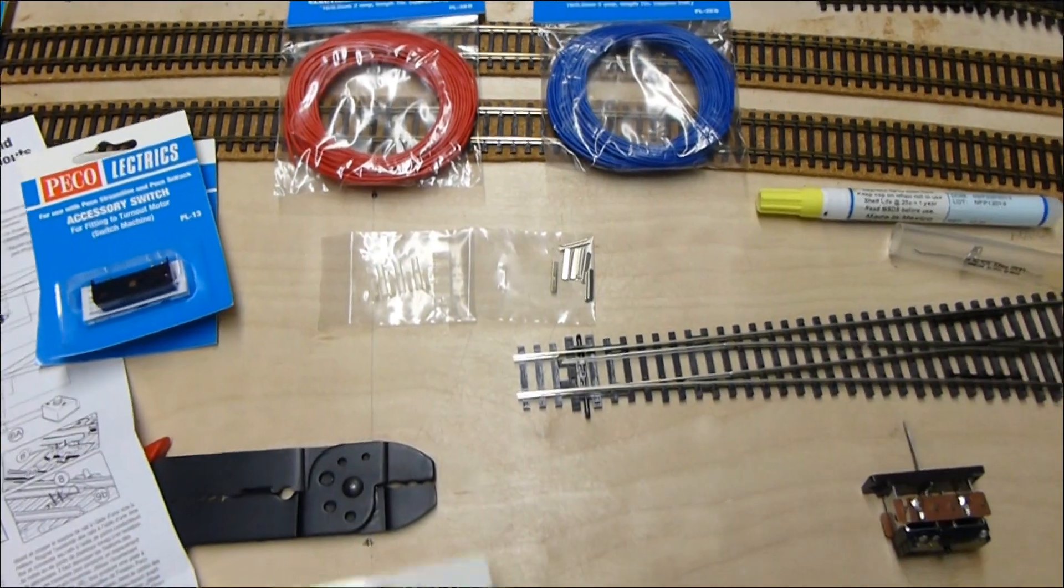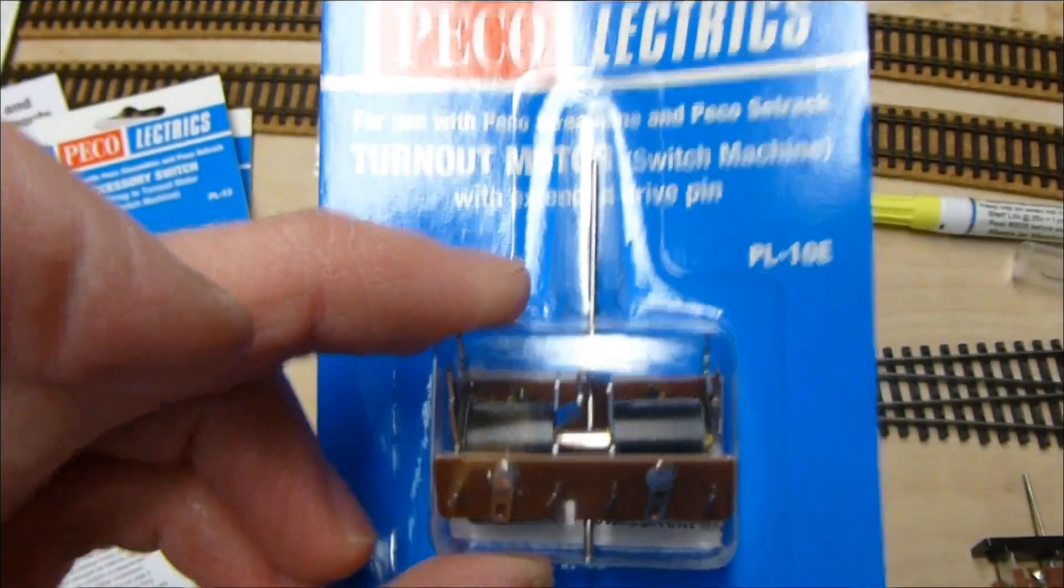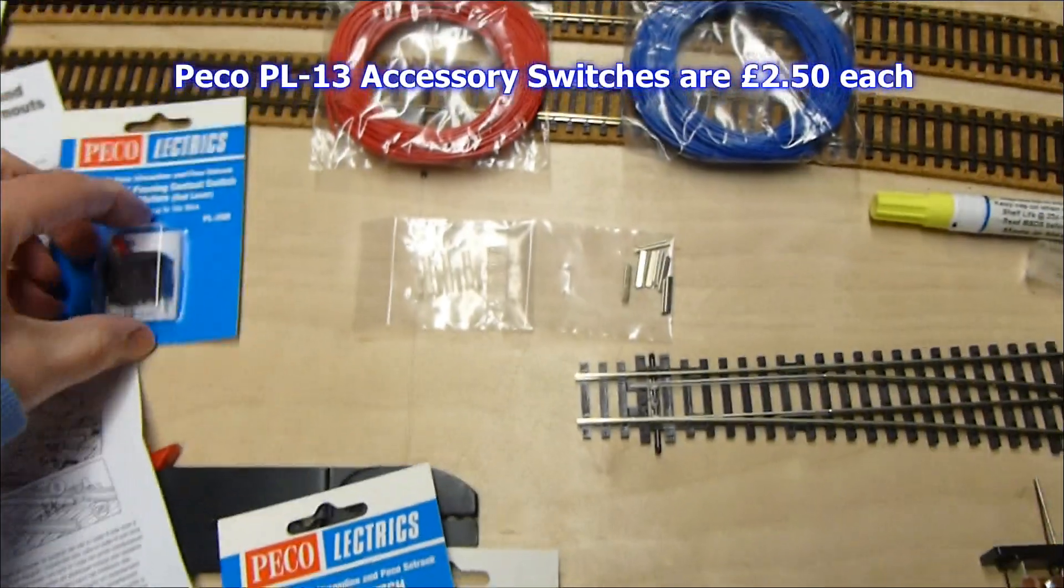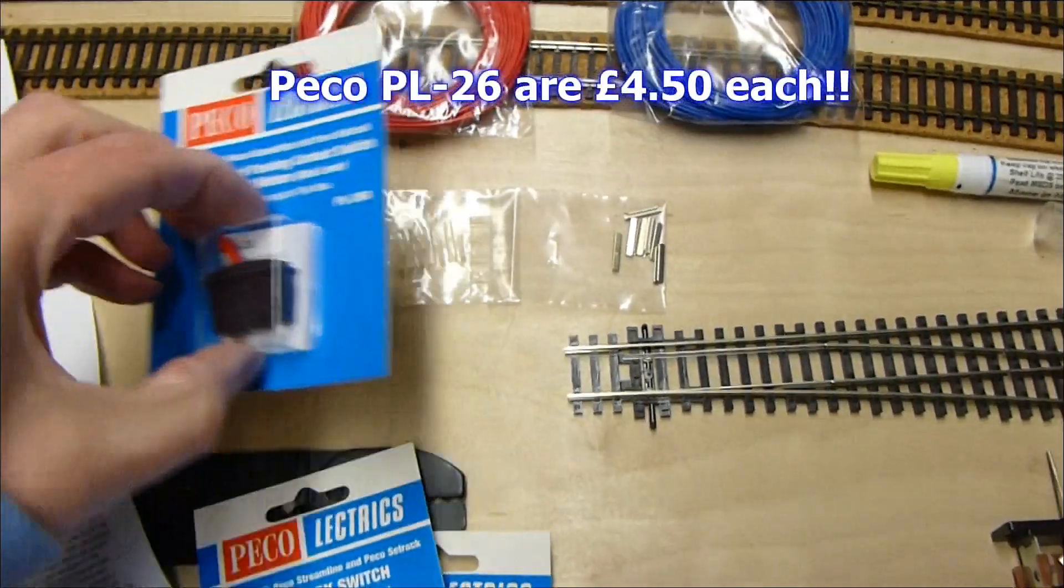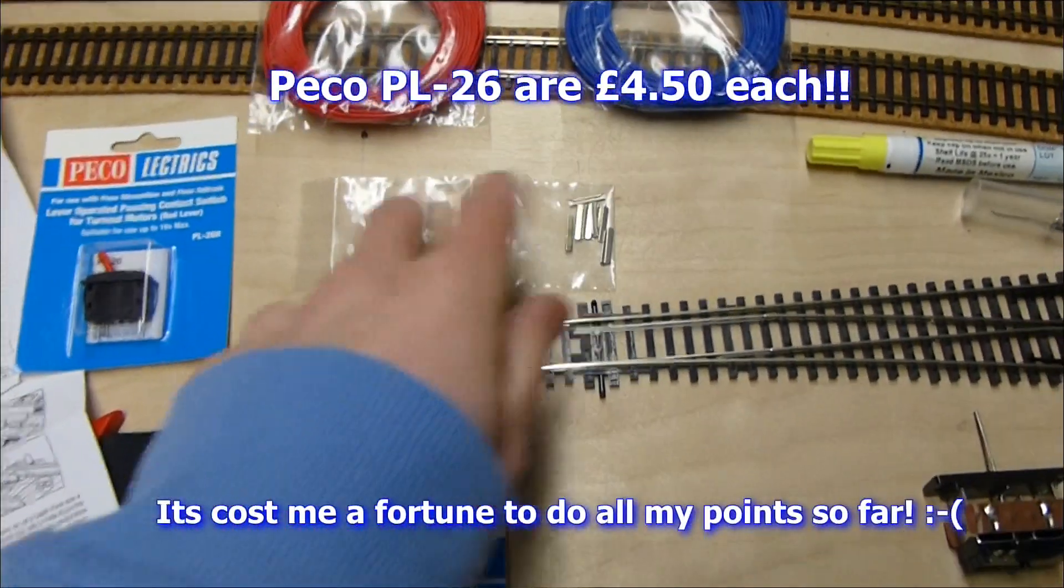PL13's on the accessory switch. PL10E - you get them in six packs for £25, I think it is, from Hattons. I think they are £2.50 a piece. I'll try and get the prices on the bottom of the screen. And, obviously, you need your standard fish plates.